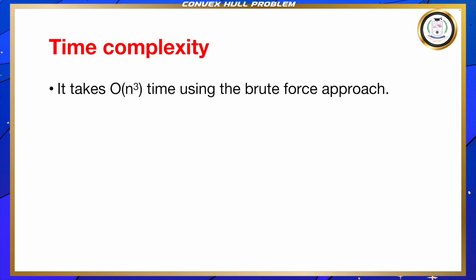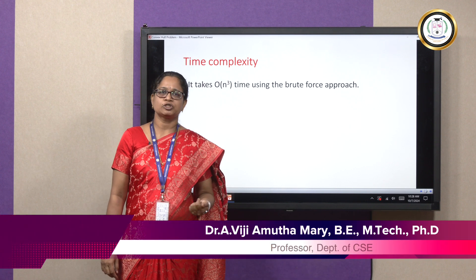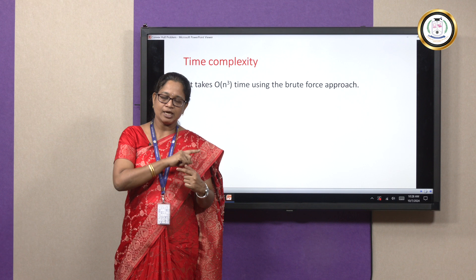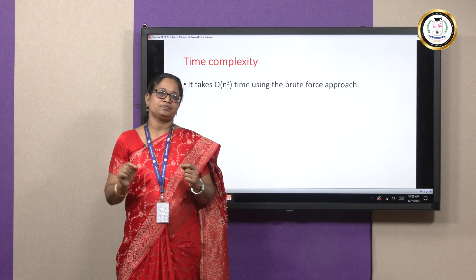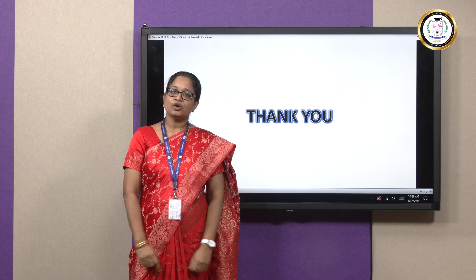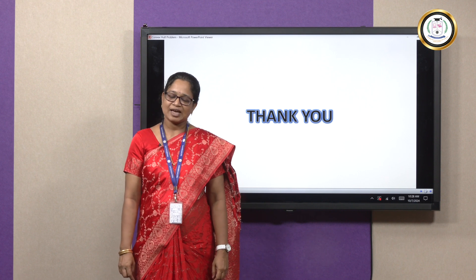The time complexity of this algorithm is the major drawback. It takes O(n³) time by brute force approach. We find all possible points — P in S and Q in S — and connect the line segments. The time complexity will be O(n³), and that is the drawback of this convex hull algorithm. Thank you learners for listening. Let us continue to quench our learning. Thank you once again.